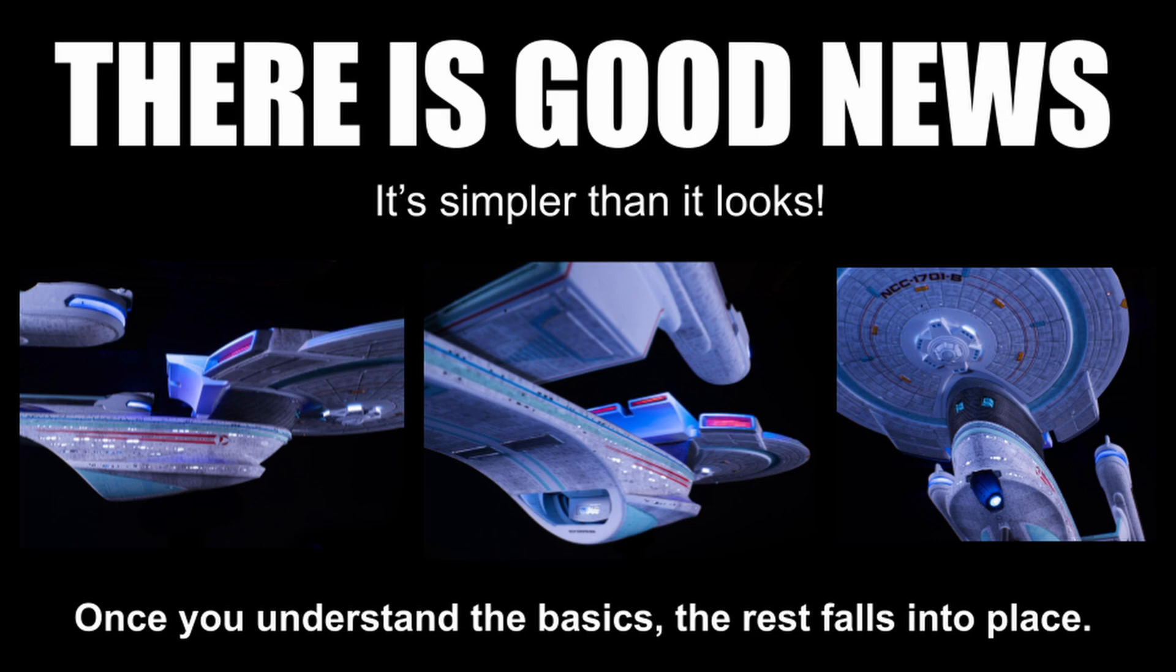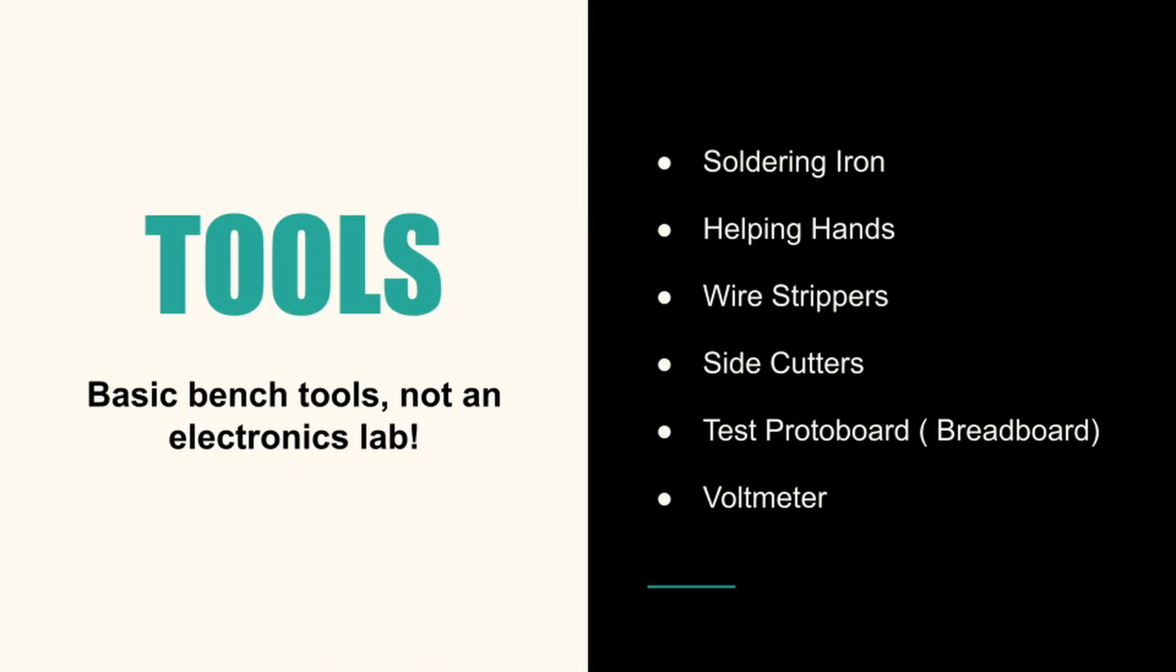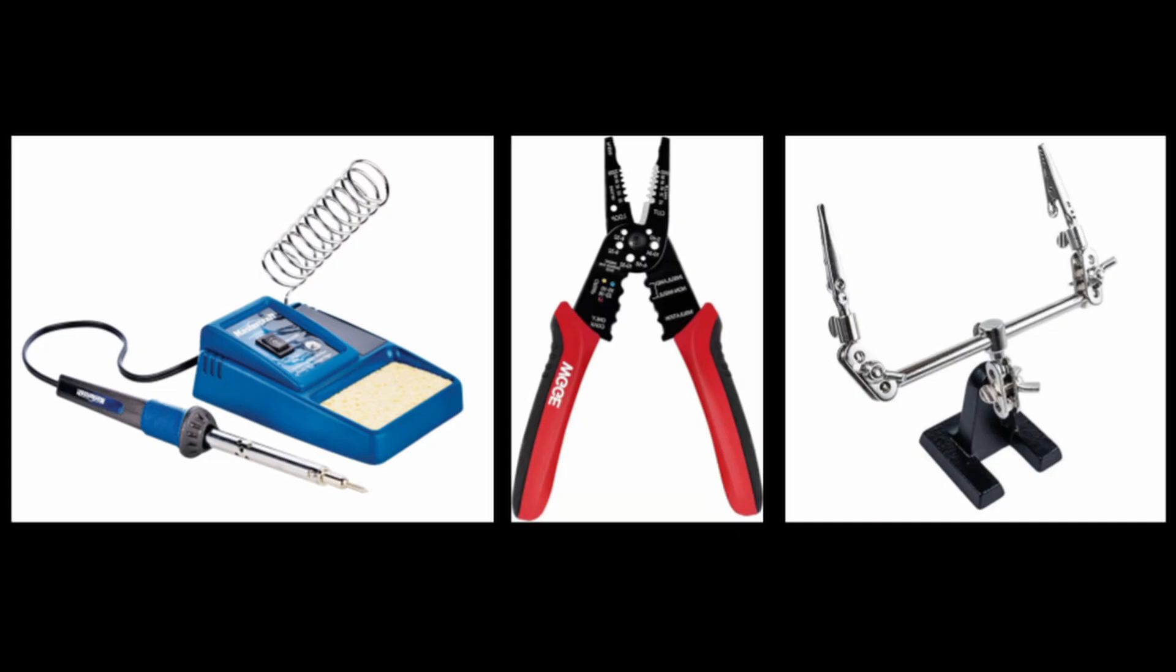At its core, it's all about basics. How current flows, how LEDs behave, and how resistors keep them safe. You also don't need a huge bench full of gear. To start, all you really need is a soldering iron, a pair of wire strippers, and a set of helping hands to hold things steady. That's it. With this minimal kit, you can start lighting today. Don't let equipment be the barrier that stops you.